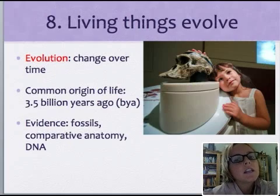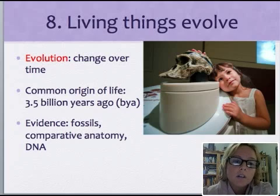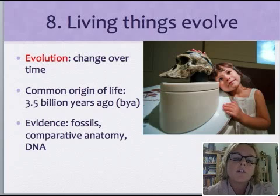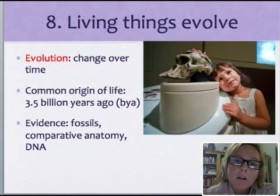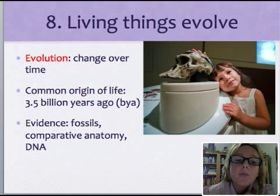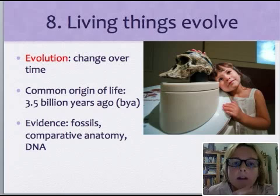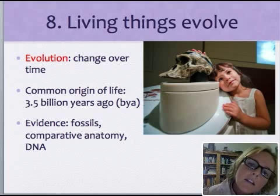The eighth and final characteristic is that living things evolve. Evolution is simply change over time. Evidence is found in fossils, comparative anatomy by looking at different skulls, and DNA analysis to determine how organisms are related. Evolution points to a common origin of living things about 3.5 billion years ago — about a billion years after the Earth was formed. The picture shows a little girl at a museum standing next to the skull of a hominid, an early ancestor of human beings.